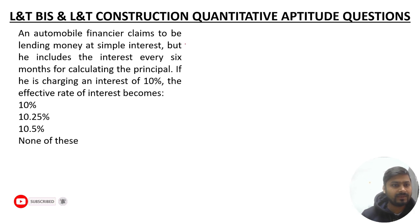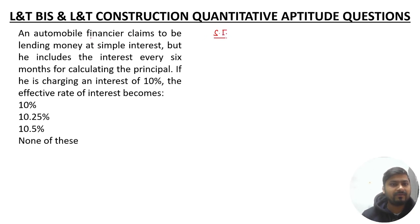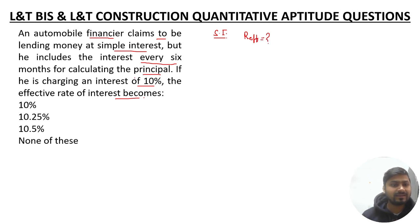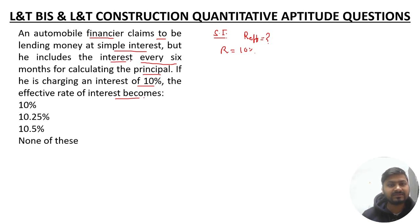The first question is a simple interest question. An automobile financier claims to be lending money at simple interest, but he includes the interest every six months for calculating the principal. He charges an interest rate of 10 percent. We have to calculate the effective rate of interest. So the target is to calculate R effective. The given rate R is 10 percent, but interest is being charged every six months.